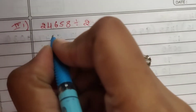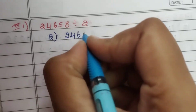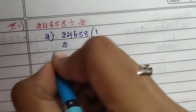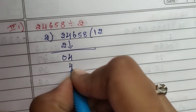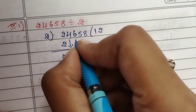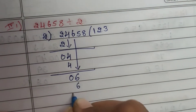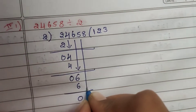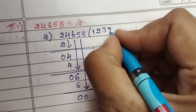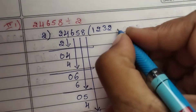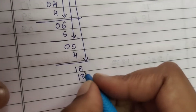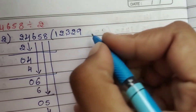4th main, first question: divide 24658 by 2. 2 ones are 2, 2 minus 2 is 0. Bring down 4: 2 twos are 4, 4 minus 4 is 0. Bring down 6: 2 threes are 6, 6 minus 6 is 0. Bring down 5: 2 twos are 4, 5 minus 4 is 1. Bring down 8: 2 nines are 18, 18 minus 18 is 0. The answer: quotient is 12329 and remainder is 0.